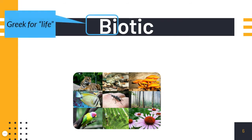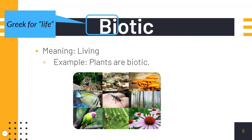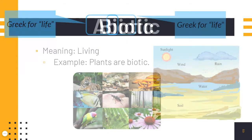Biotic. It is Greek for life. The meaning is living. Examples are plants, animals, fungi. In your notebook, write down the word biotic, the term, the meaning — living — and sketch an example. I'm not going to judge you on your drawings. I'm the world's worst drawer — wait till you see me.